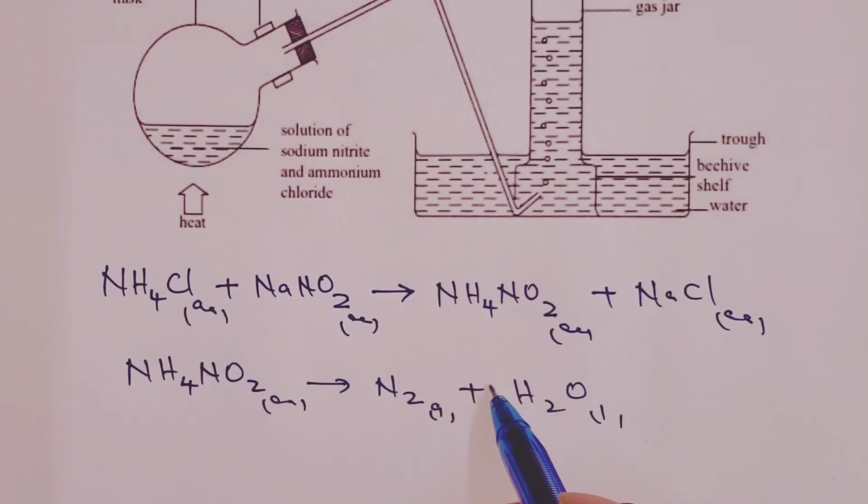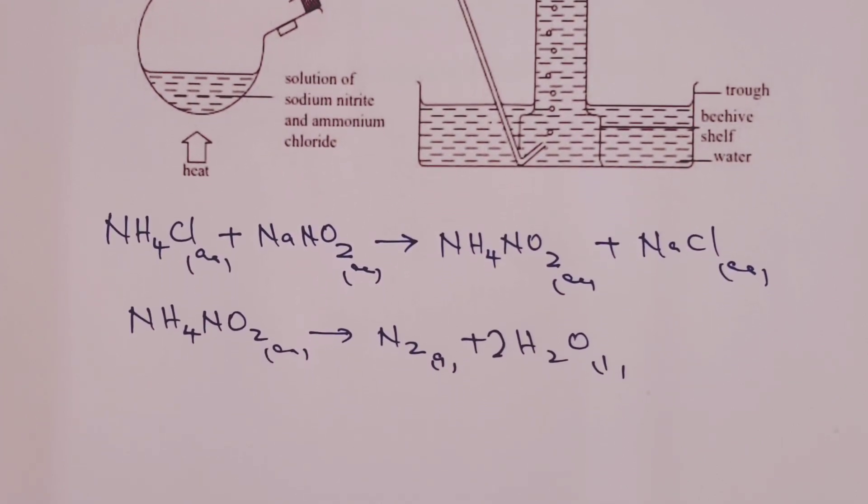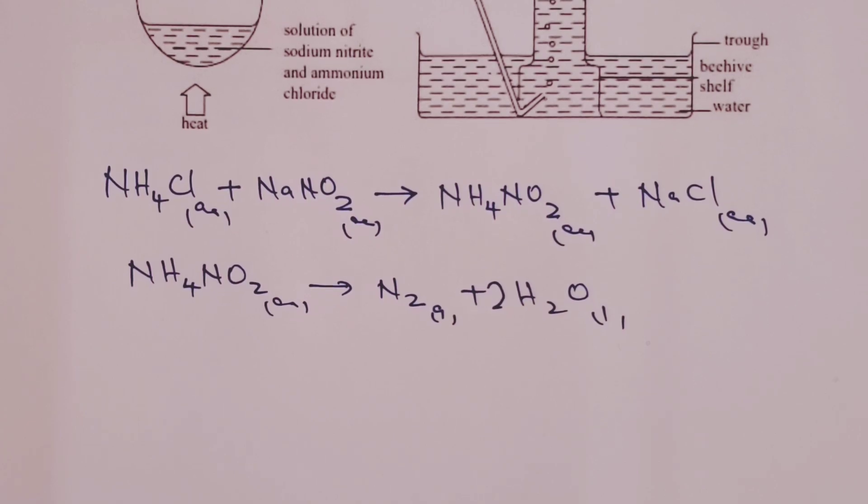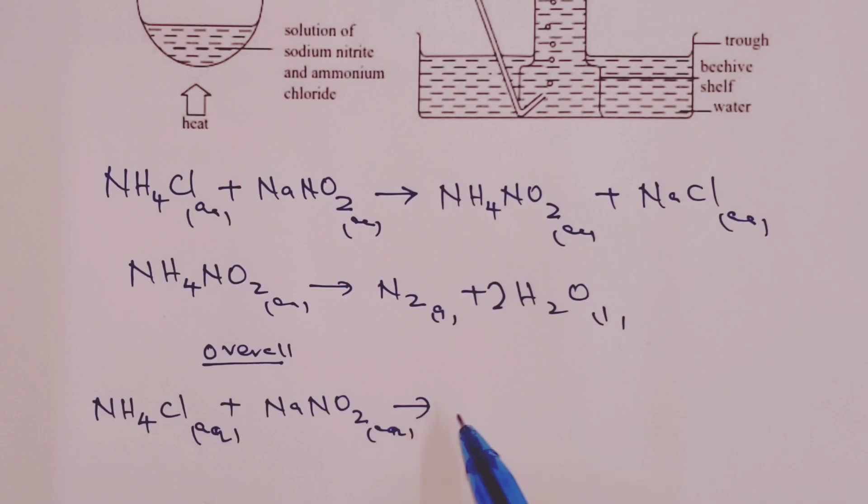These we balance with our two on water. So, these two equations can be combined into an overall equation. So, we have an overall equation where we have ammonium chloride reacting with sodium nitrite. And we end up forming sodium chloride. We form water. And we also form our nitrogen gas.